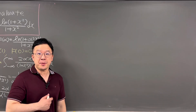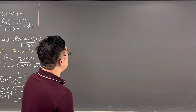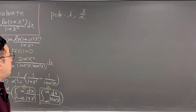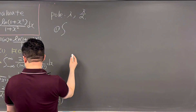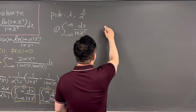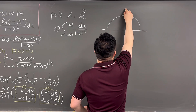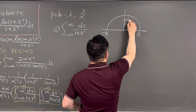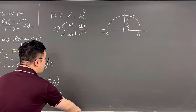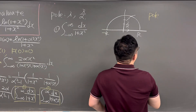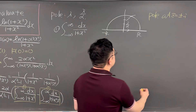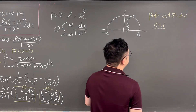Starting with the first integral: integral from negative infinity to infinity of dx/(1 + x²). We use a semicircle contour in the upper half-plane. The poles of 1/(1 + z²) are at z = ±i, and we choose z = i, which lies inside the contour.